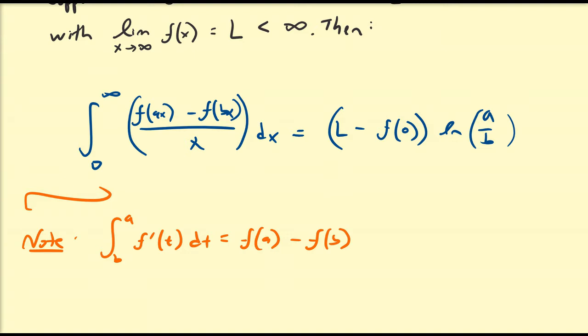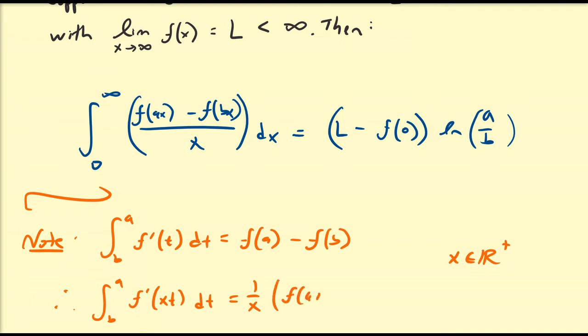What I can do is replace t with xt. So I can have f'(xt) dt. Here x is going to be a positive number in our proof. One can show that this is equal to 1 divided by x times f(ax) minus f(bx). I'll leave it to you to verify via u-substitution that this is correct.